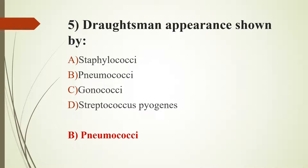Staphylococci are seen in Gram staining as clusters resembling a bunch of grapes. Gonococci appear as coffee bean-shaped intracellular diplococci. Streptococcus pyogenes forms long chains, versus the grape-like clusters of staphylococci.